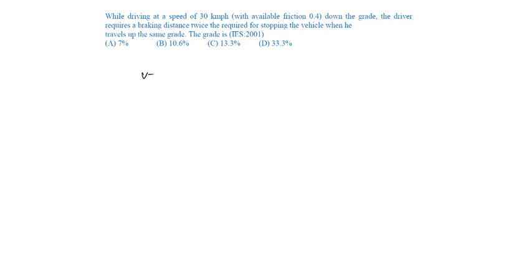Given speed is 30 kmph and available friction is 0.4. While driving at a speed of 30 kmph with available friction 0.4 down the gradient, the driver requires braking distance that is twice that required to stop the vehicle when traveling up the gradient.